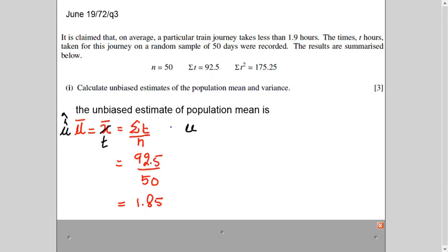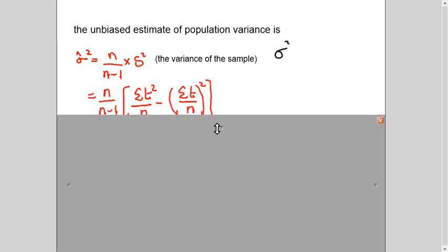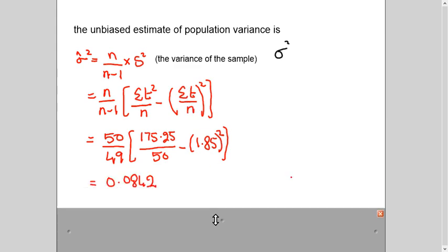Now for the variance, the formula is this. Now for the simple variance of the population, we use sigma square. So again, there is a small hat. It is telling you that it is the unbiased estimation of the population mean. It is unbiased and this s square is representing variance of the sample. So formula is n over n minus 1 multiplied by s square. And you all know the formula for the variance. Sigma t square over n minus mean square. This is actually your mean, which you have just calculated in part one. So in this formula, you will plug in the values n is 50 and minus 1 is 49. This was given in the question. This we have just calculated. So you are finding unbiased estimation of the population variance.